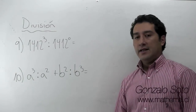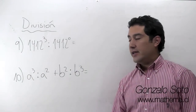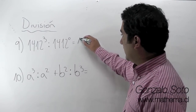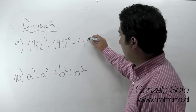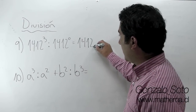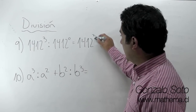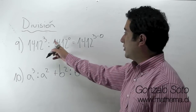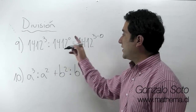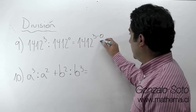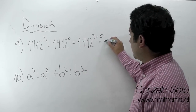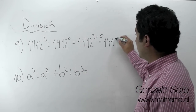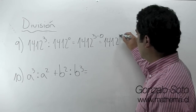En el ejercicio 9 tenemos división de potencias de igual base. Conservamos la base y restamos los exponentes, pero 3 menos 0 — nosotros inmediatamente sabemos que el resultado es 3.